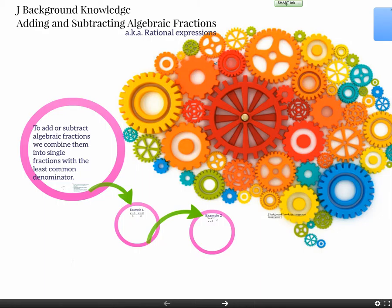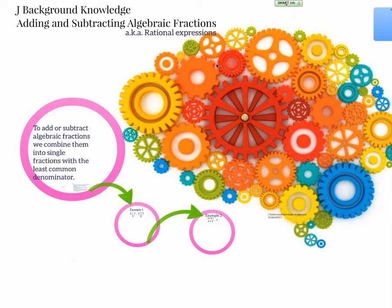Alright, so background knowledge section J is adding and subtracting algebraic fractions, also known as rational expressions. I know that's the term that I've used when I've talked about it or taught it. It's usually rational expressions, but the IB used the term algebraic fractions.